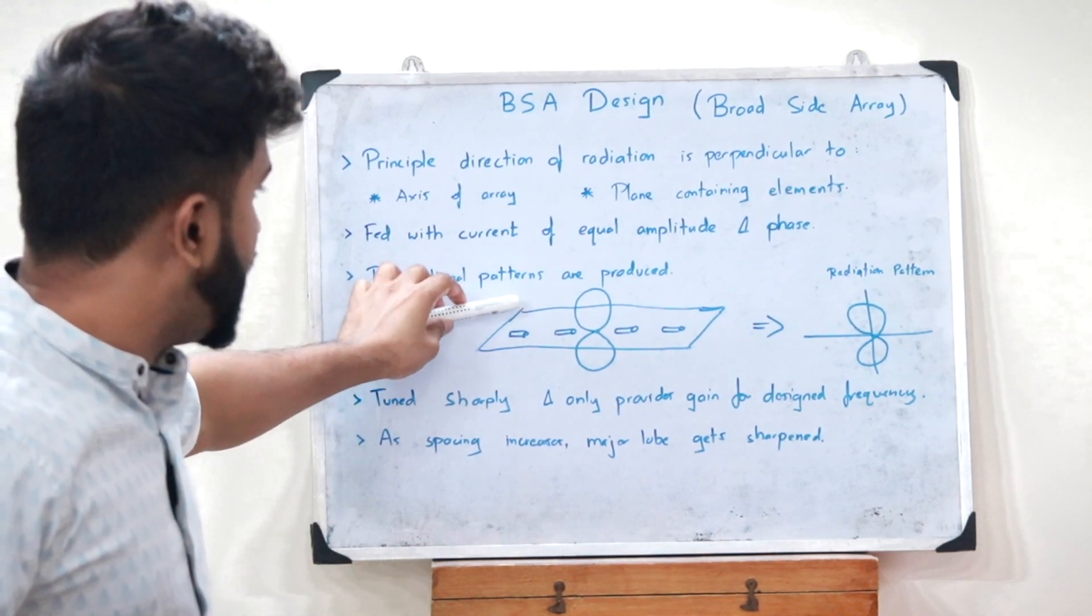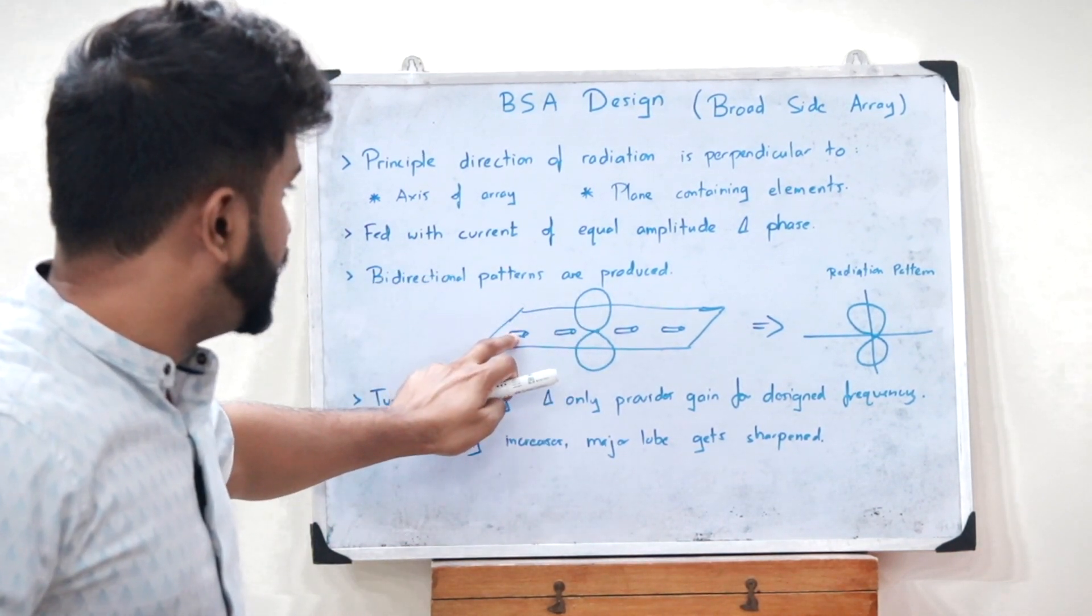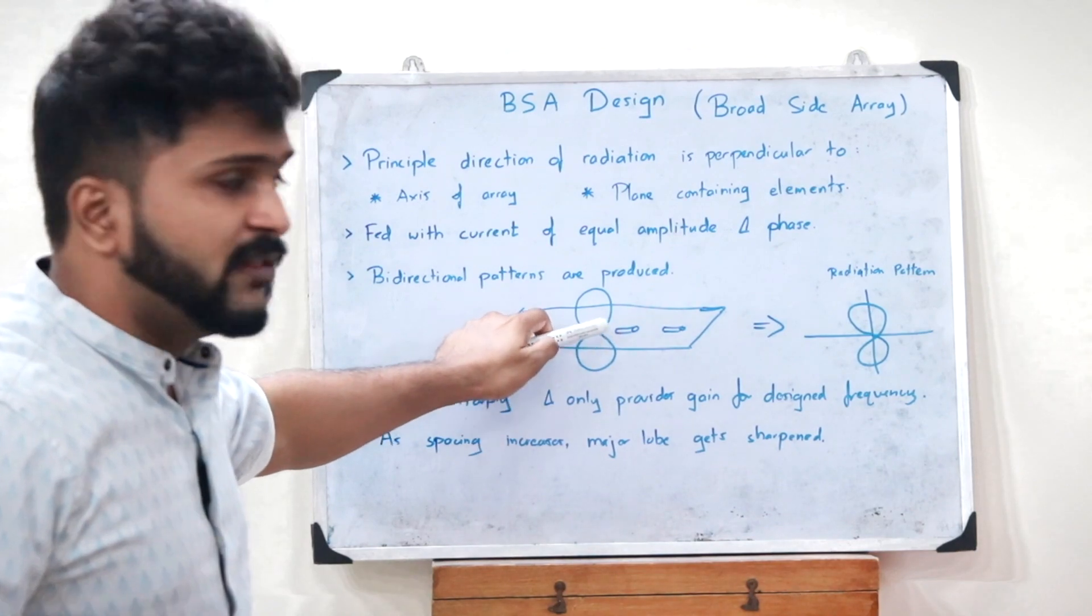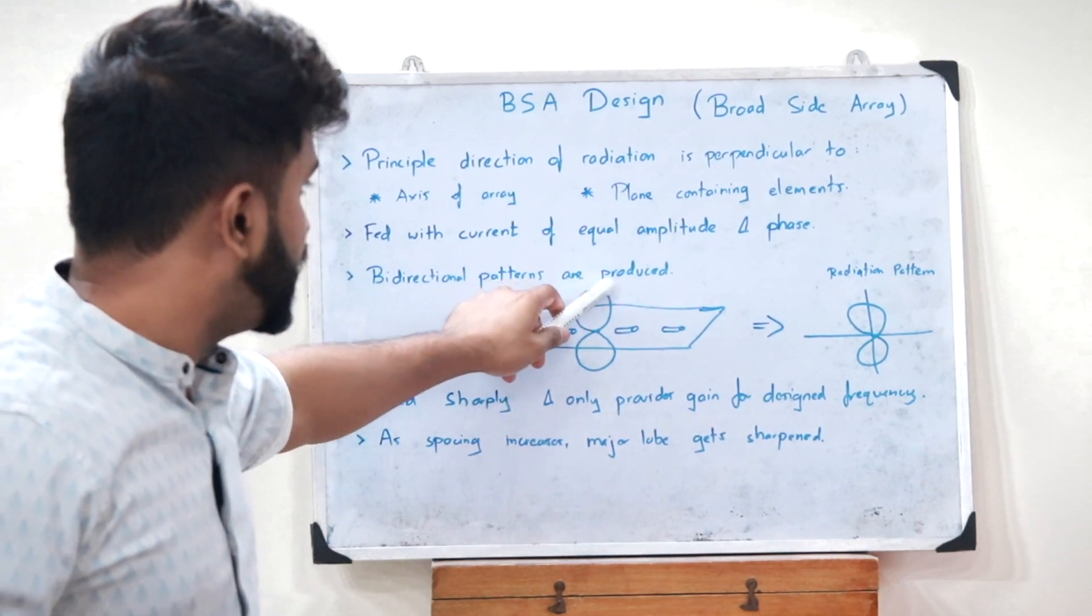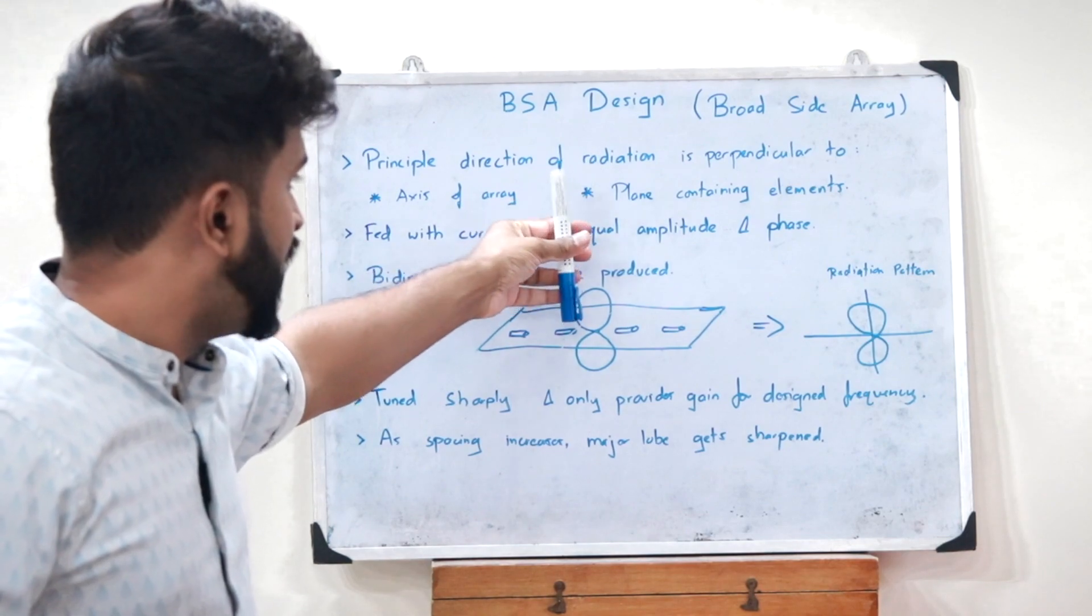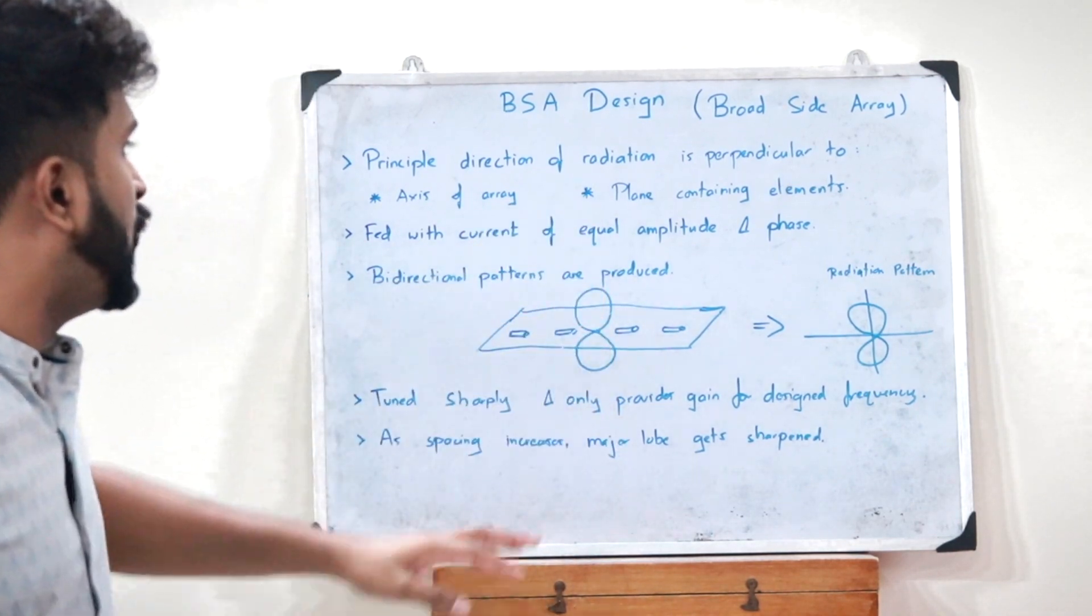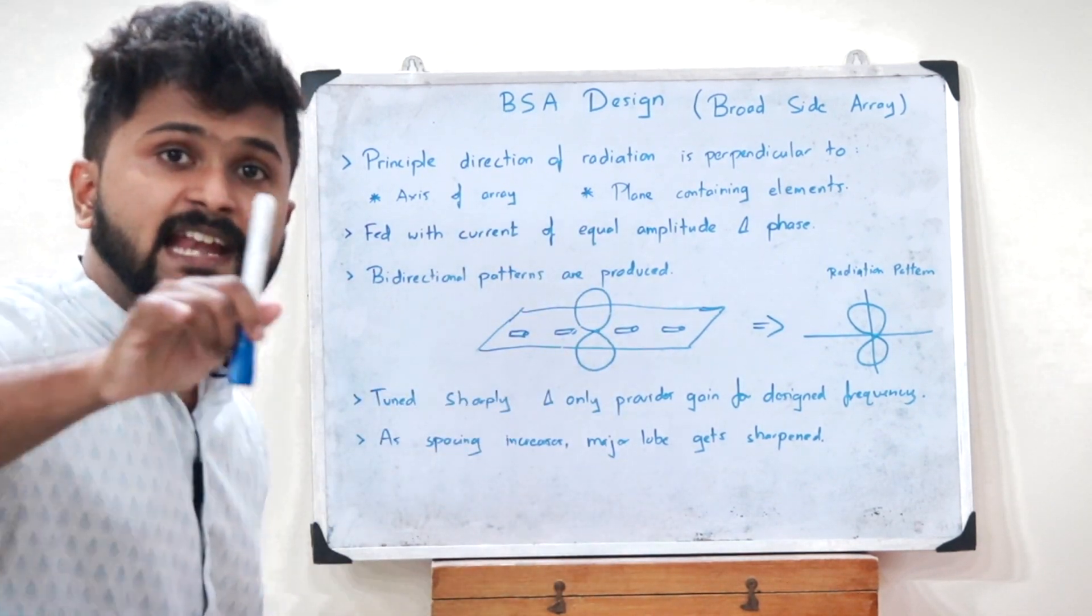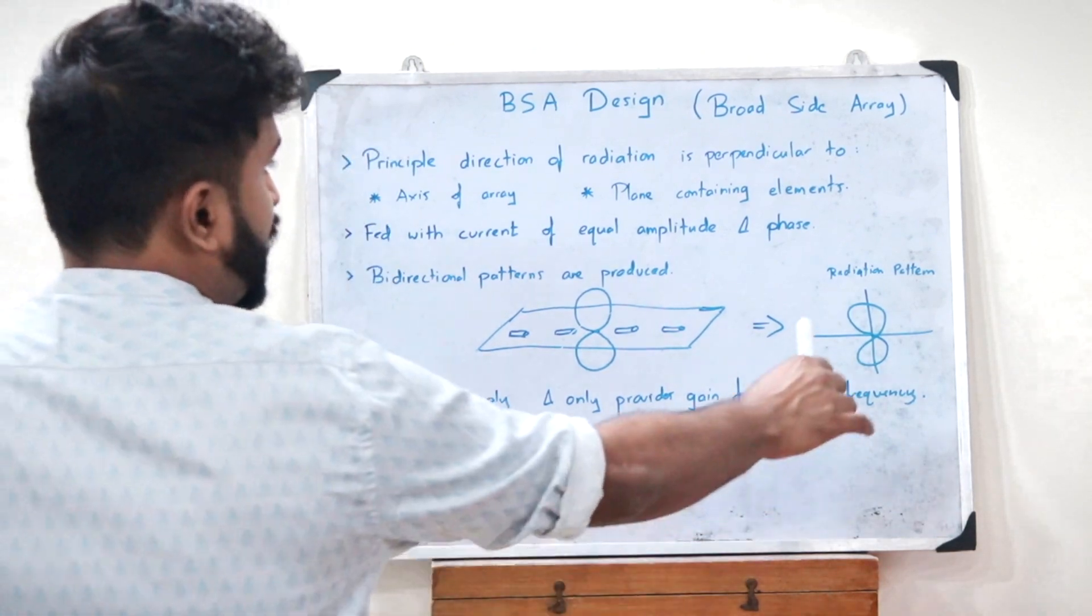So here if this is the plane that contains the antenna elements, if these are the antenna elements, then the pattern that is produced is like this. So it has got two directions, one in this direction and one in this direction, and therefore the radiation pattern that is obtained is of this form.